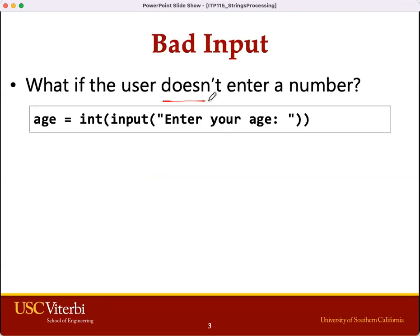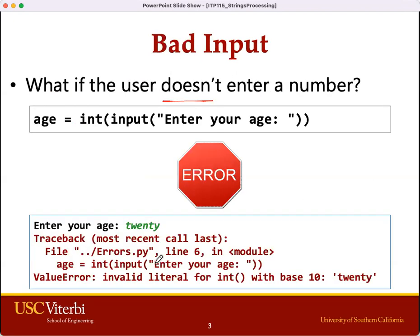What if the user doesn't type in a number? What if they type in the word 'twenty' instead of the two digits 2 and 0? In this example, the int function doesn't know how to convert the word 'twenty' to a number, so it's going to give us an error.